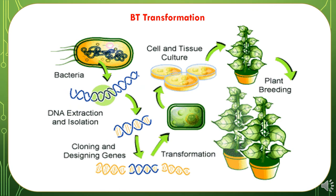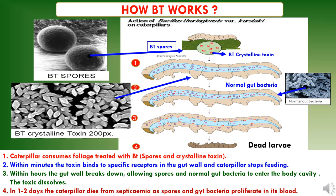Here we have shown a picture representing BT transformation to cotton crop. DNA was extracted from bacteria Bacillus thuringiensis, cloning and designing of genes was performed, and the gene was transformed to cells and tissue of cotton plants using genetic engineering methods. It was then inserted and introduced into the cotton crop, converting it to BT cotton by induction of the Bacillus thuringiensis gene that produces toxic substances or protein synthetics.